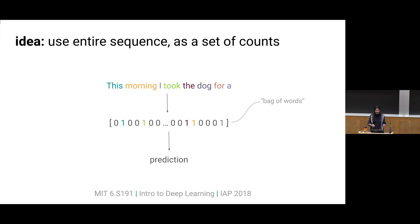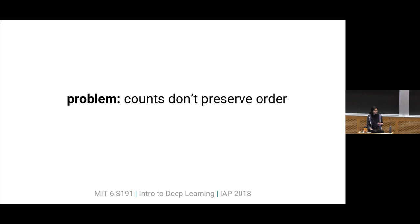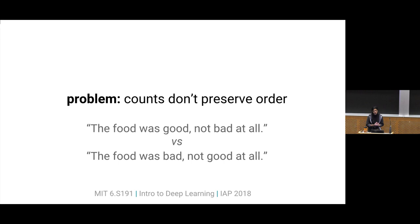One way we could do this is by using the entire sequence but representing it as a set of counts. In language, this representation is also known as a bag of words — a vector in which each slot represents a word, and the number in that slot represents how many times that word occurs in the sentence. Now we have a fixed-length vector no matter how many words we have. However, the problem is that we're losing all of the sequential information. These counts don't preserve any order. Consider these two sentences: "The food was good, not bad at all" versus "The food was bad, not good at all." These are completely opposite sentences, but their bag-of-words representation would be exactly the same.